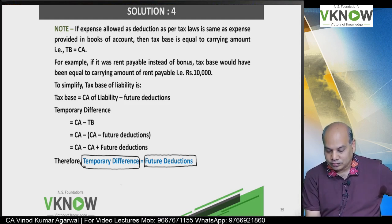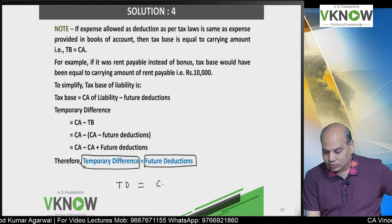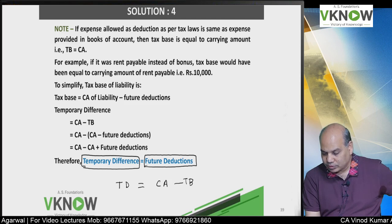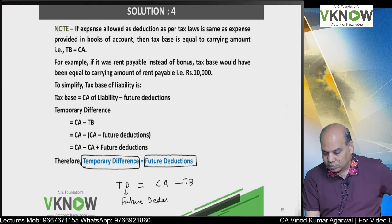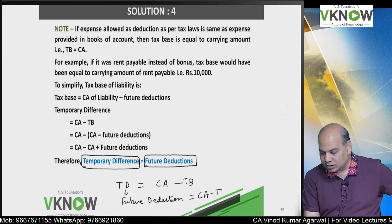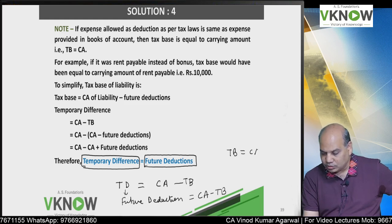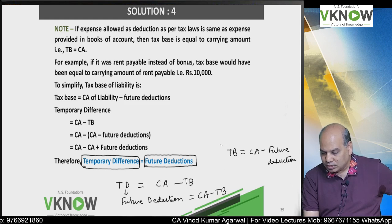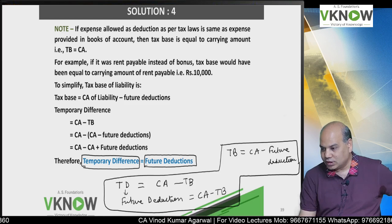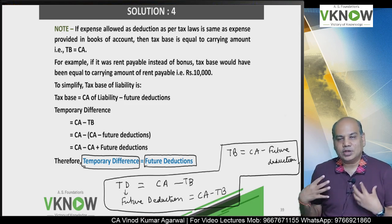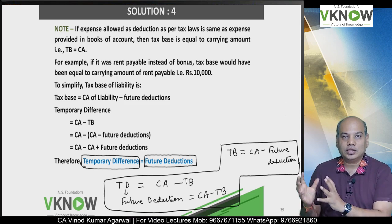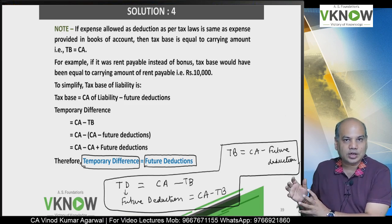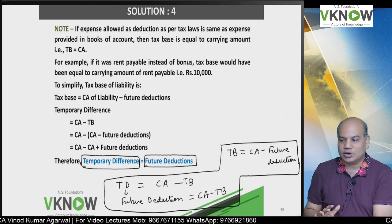Can I do reverse working also? Temporary difference equals carrying amount minus tax base, and temporary difference is the future deduction. Therefore tax base equals carrying amount minus future deduction. One key thing to understand: if it is a liability, temporary difference equals future deduction allowed. And if you've understood this, tax base equals carrying amount minus future deduction allowed.